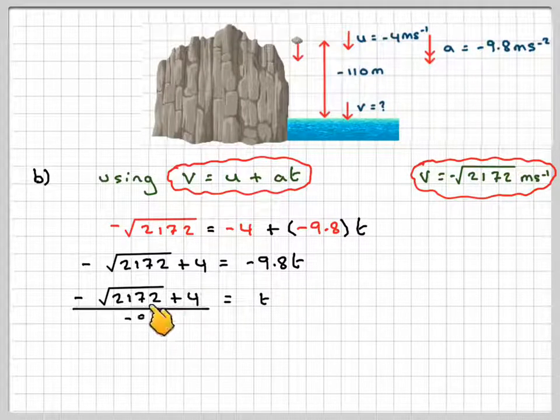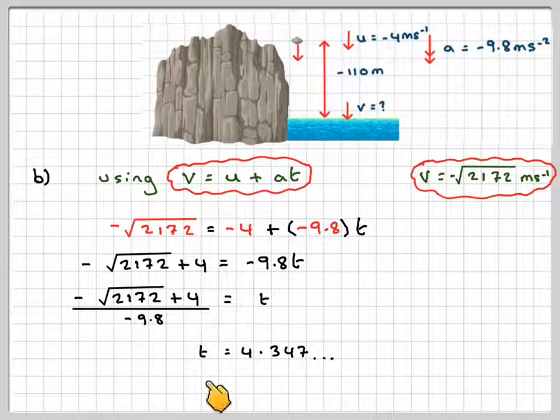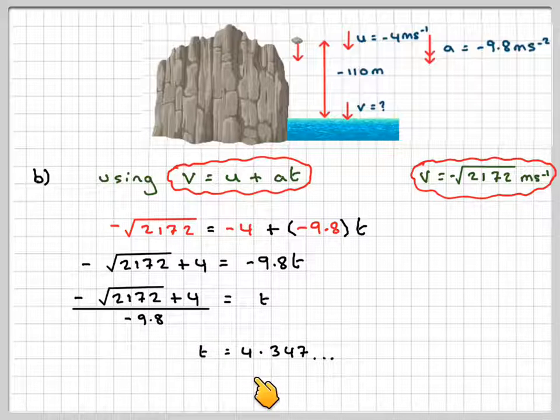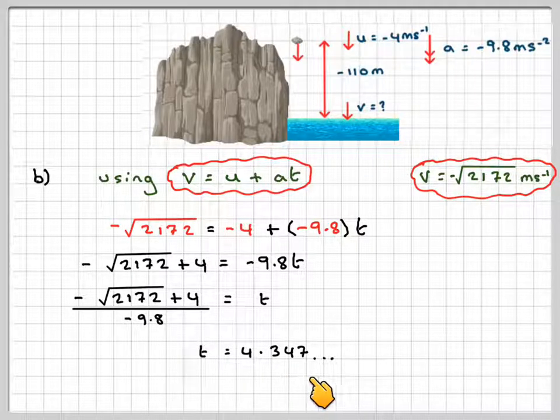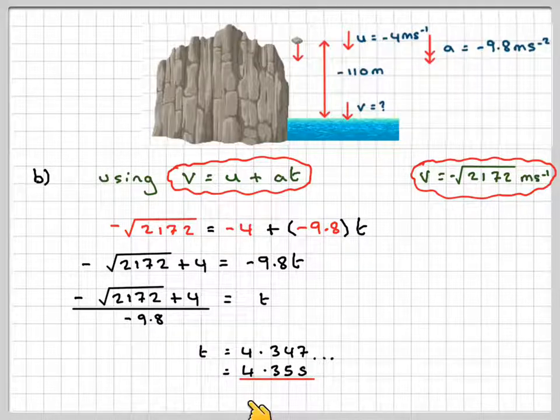Then the next step is we need to divide this by -9.8, and that will give that t is equal to 4.347. This has come out to be positive, which is OK, which is what we expected to do. That gives me 4.35 seconds.